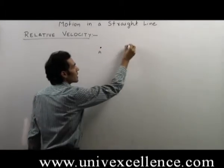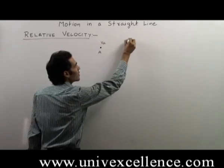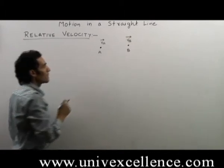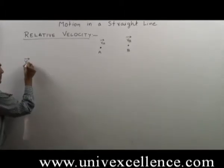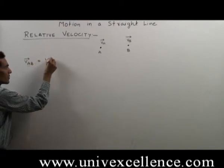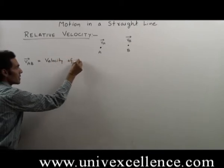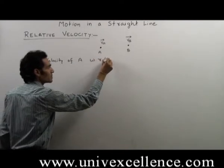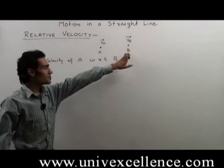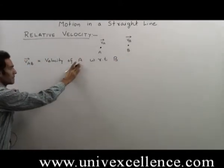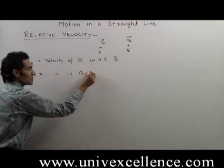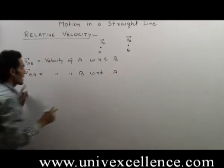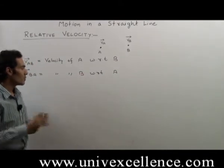Now, relative velocity: suppose there are two objects A and B moving with velocities VA and VB. Relative velocity is defined as the velocity of A with respect to B, written as VAB — this is the velocity of object A with respect to B, where the observer is B and the system moving is A. Similarly, VBA is the velocity of B with respect to A, where the observer is A and the system moving is B.